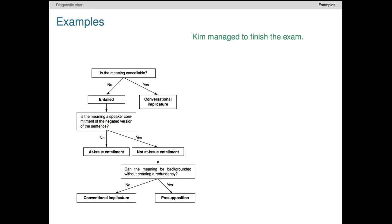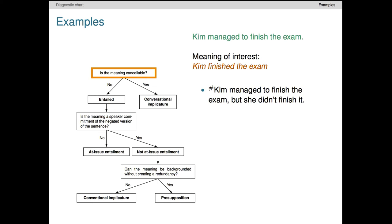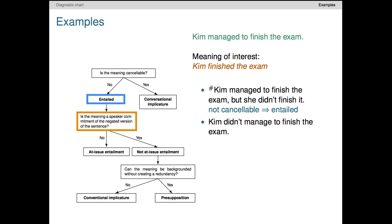Our next sentence is 'Kim managed to finish the exam,' and the target meaning is that Kim finished the exam. We first try to cancel the meaning by adding 'she didn't finish it,' and the result sounds quite marked. That's the linguistic sign that something seems to have gone wrong with the utterance. In this case, what's gone wrong is that the speaker seems to have expressed a contradiction. So this meaning can't be a conversational implicature. That bumps us over to the entailed square. Thus we negate the sentence to see what happens to the original meaning. The sentence is 'Kim didn't manage to finish the exam.' The target meaning has clearly been negated in this case, so we arrive at the diagnosis at-issue entailment, and our work is done.